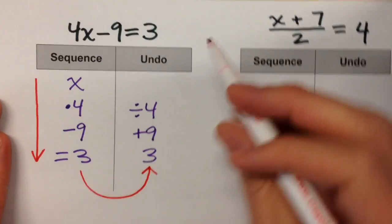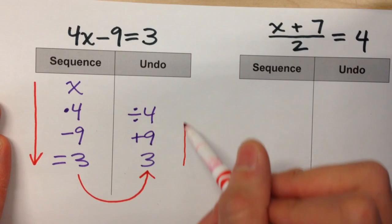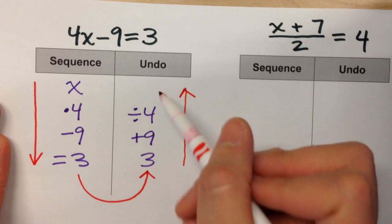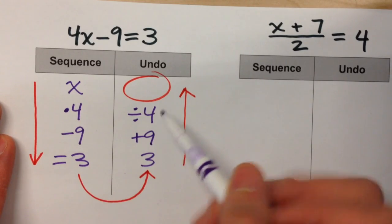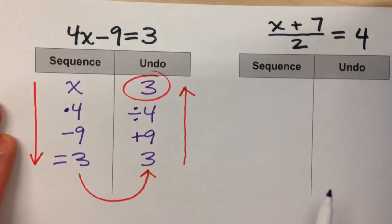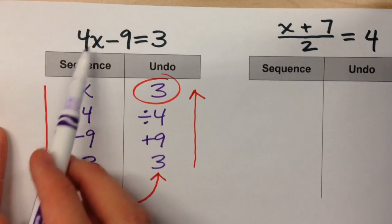And if we do these actions, we should be able to get our answer. 3 plus 9 is 12. Divided by 4, 3. So that tells us the value of x must be 3.